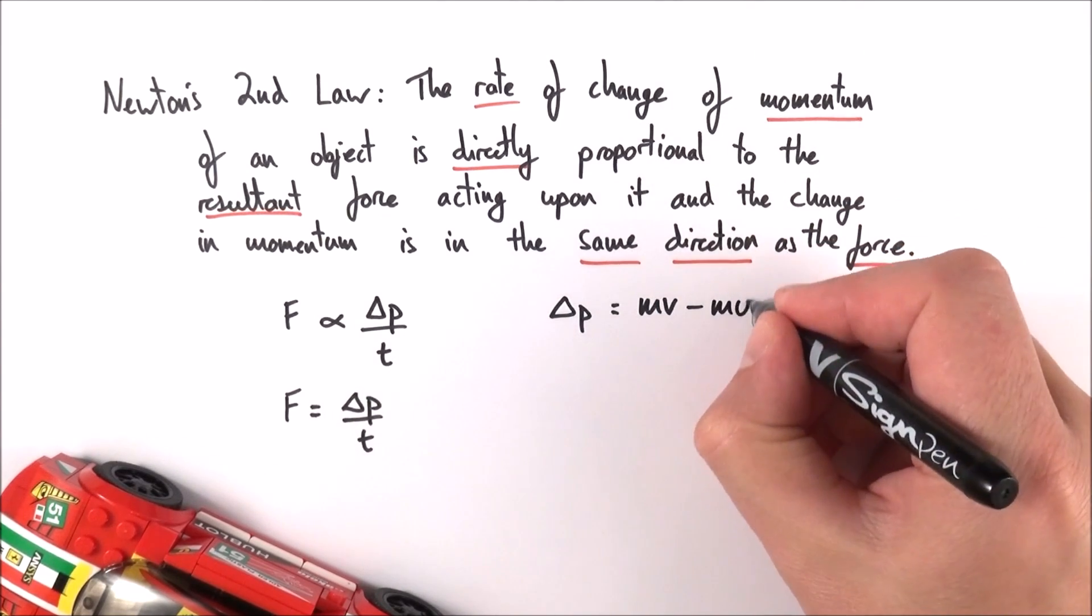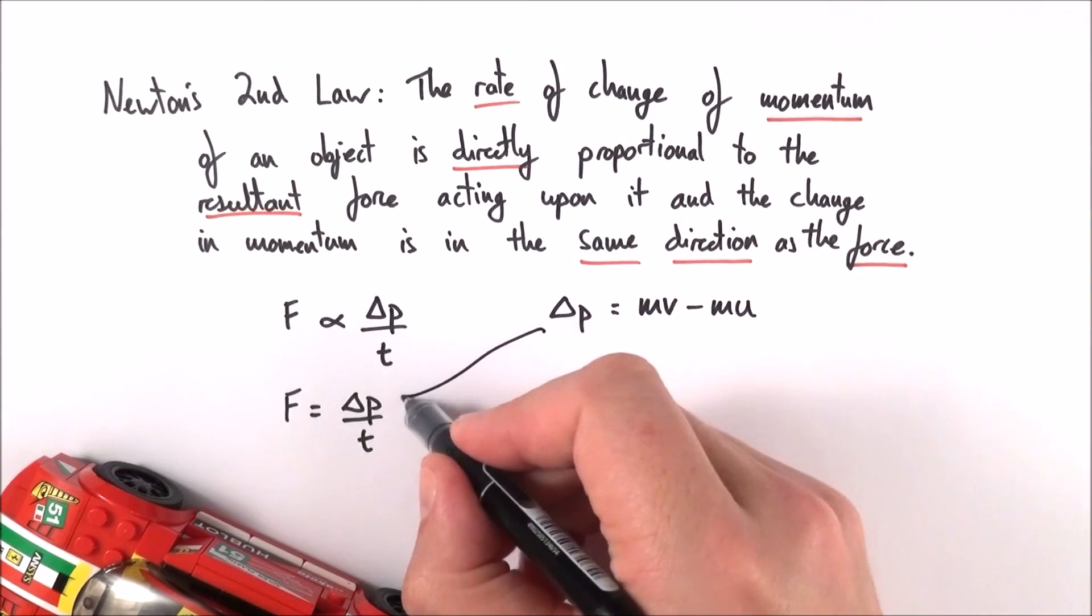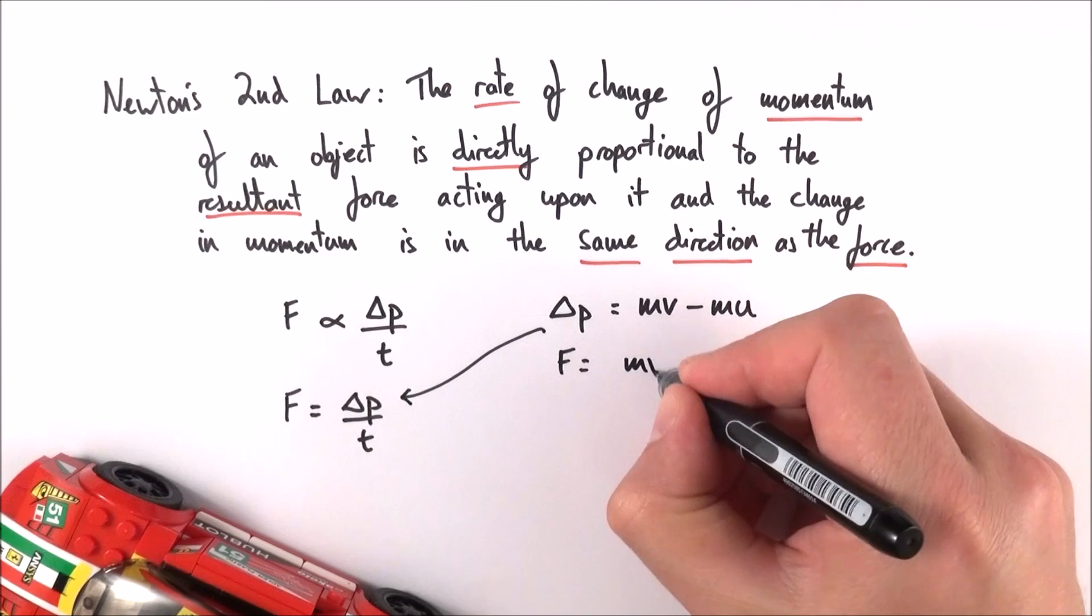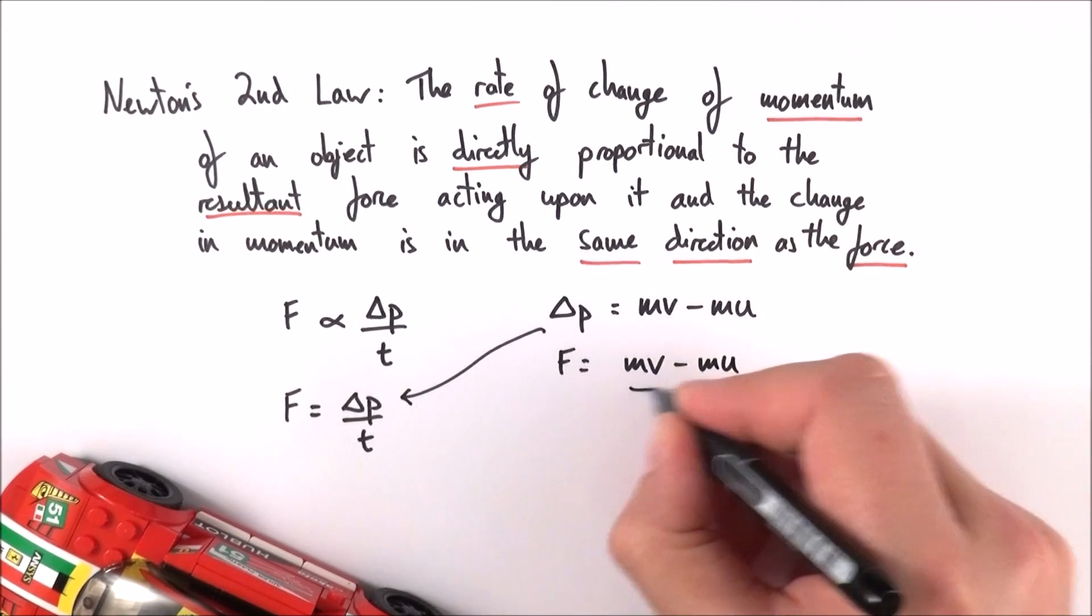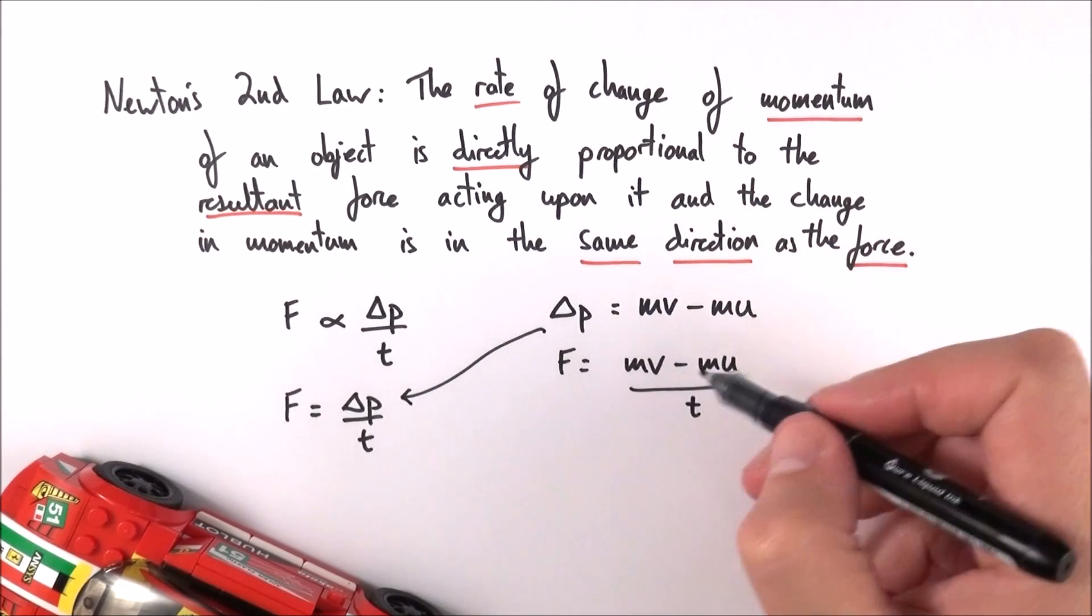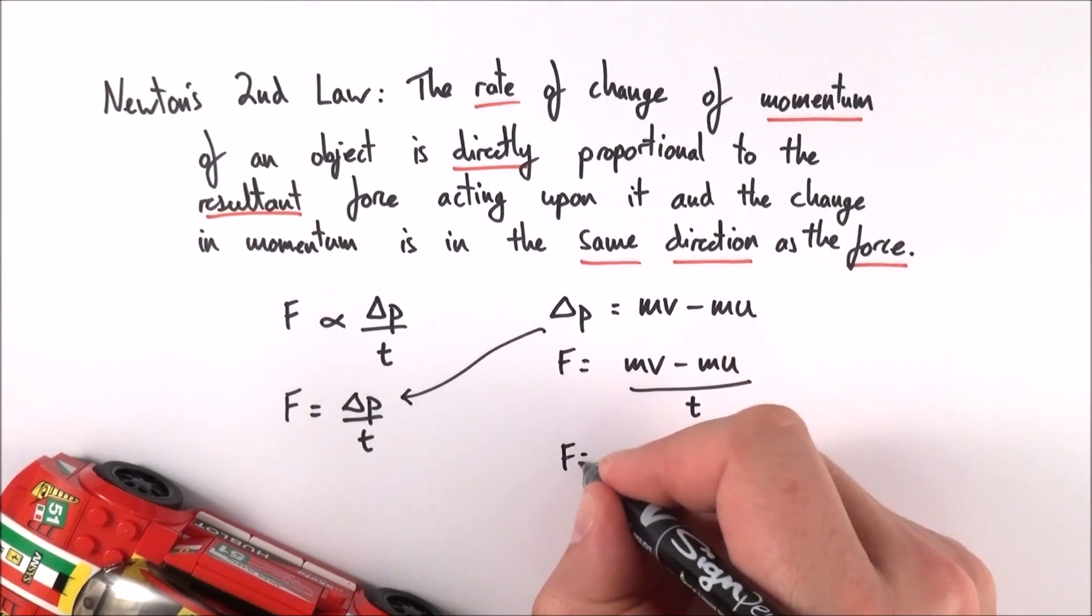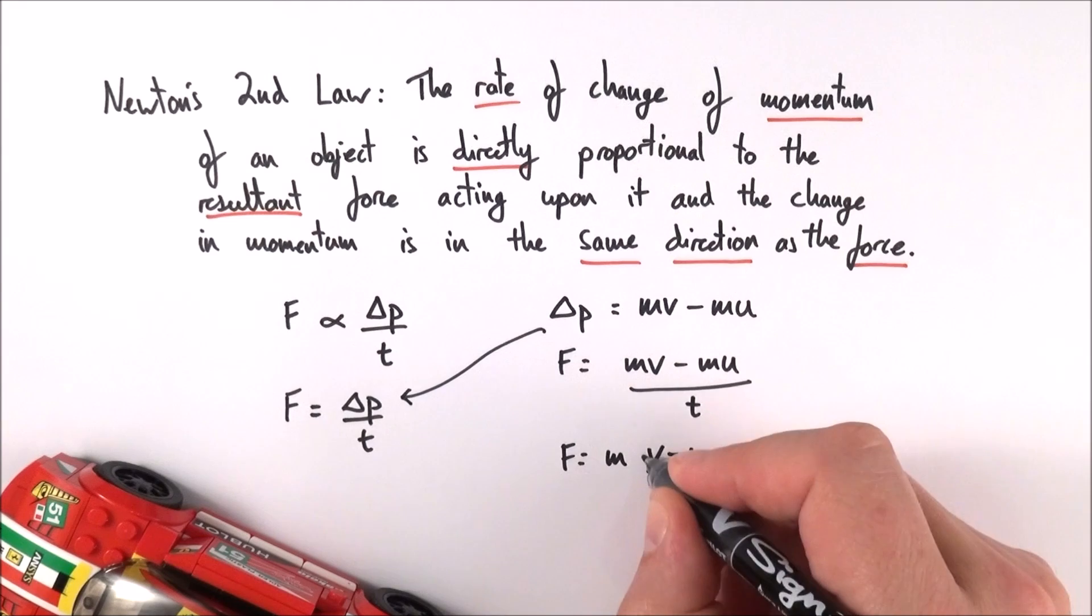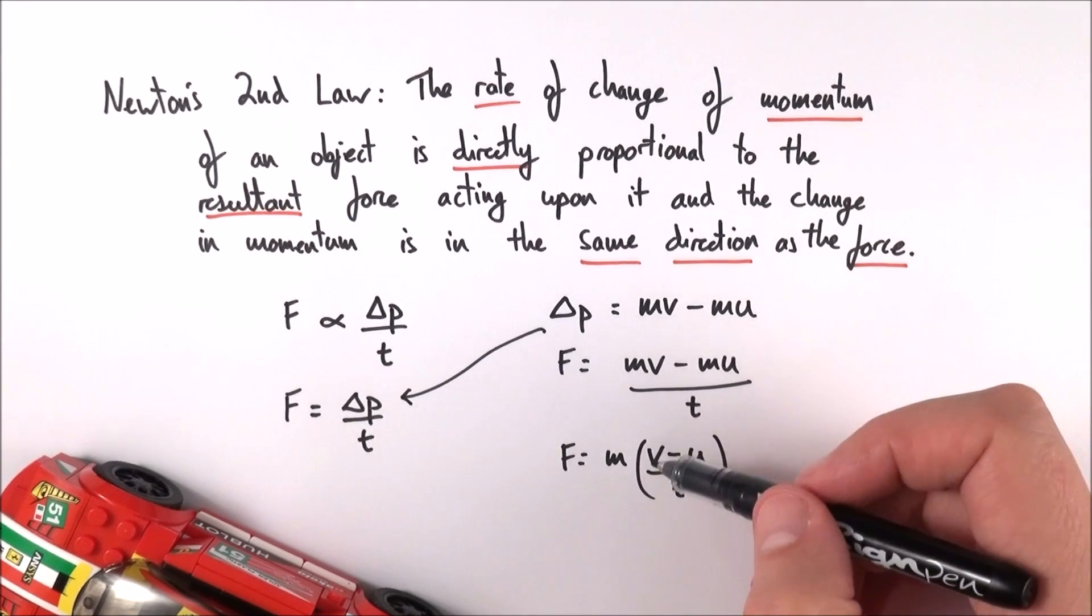If I put this back into the equation, I can say that the force is equal to MV minus MU over T. And if I take out the M terms, I can say that F is equal to M multiplied by V minus U over T.